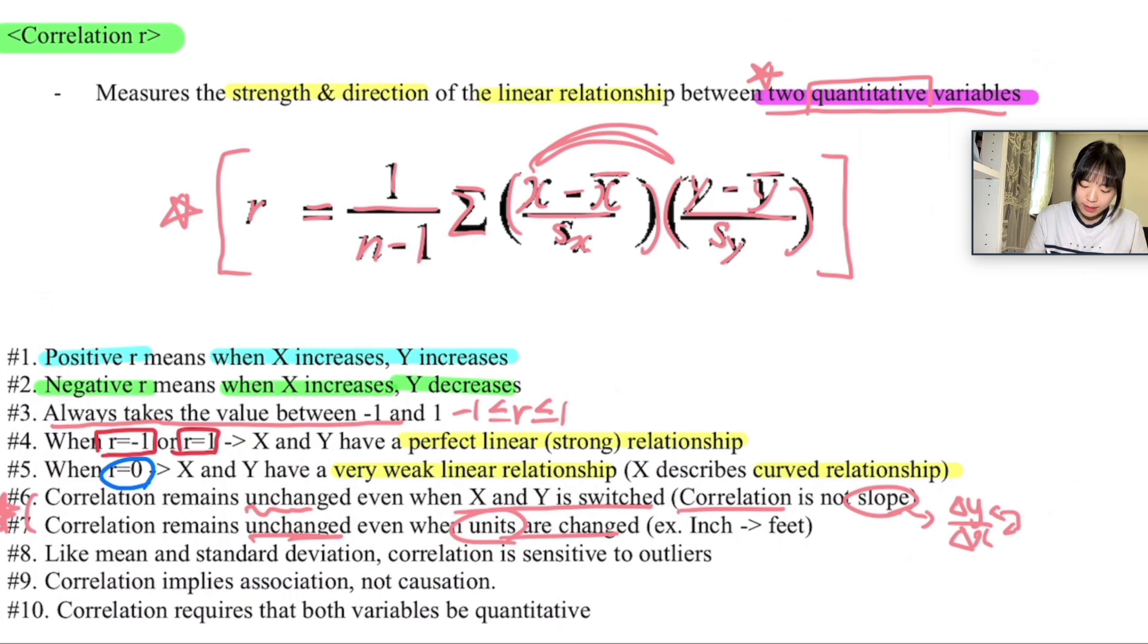And then over here, like mean and standard deviation, correlation is sensitive to outliers.